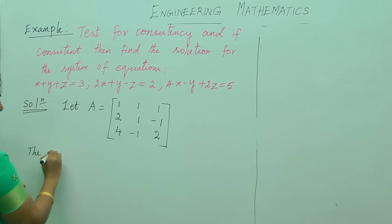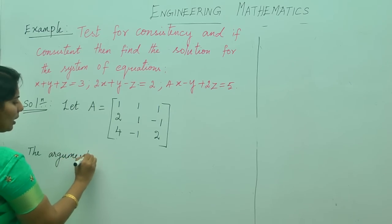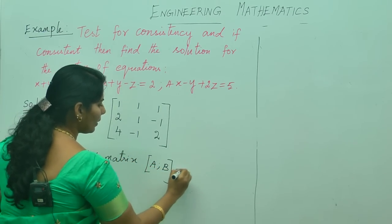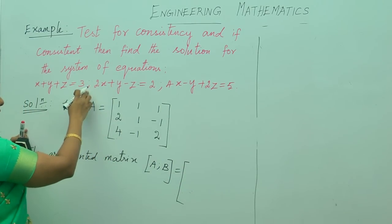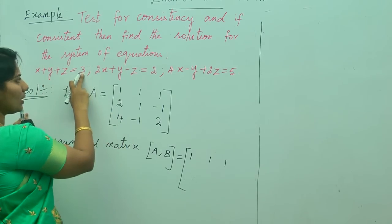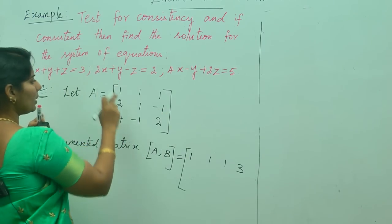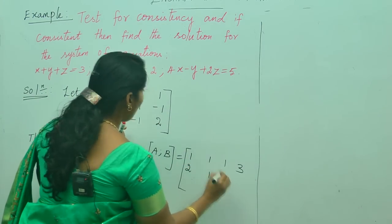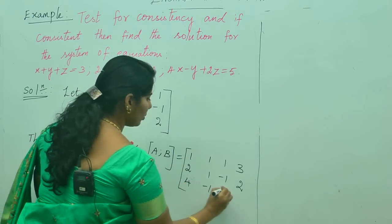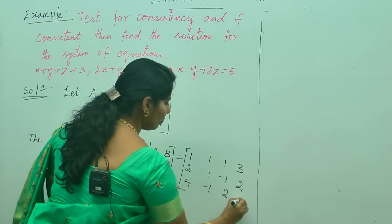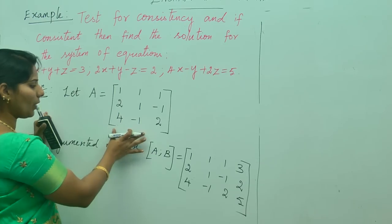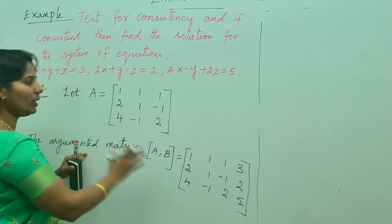Now the augmented matrix [A|B] is formed by writing the coefficient matrix along with the right-hand side of the linear equations. The first row is 1, 1, 1 and the right-hand side is 3. The second row is 2, 1, minus 1 with right-hand side 2. The last row is 4, minus 1, 2 with right-hand side 5.